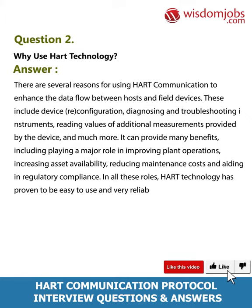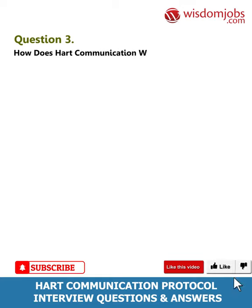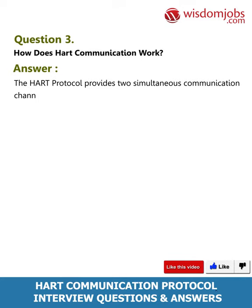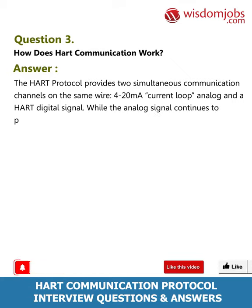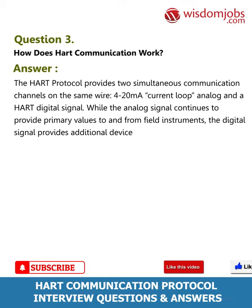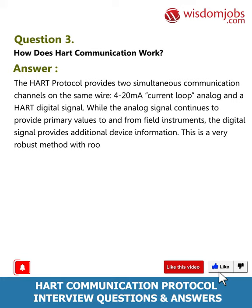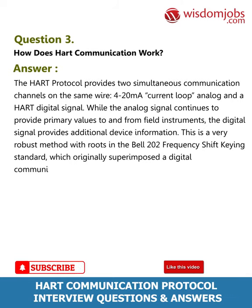In all these roles, HART technology has proven to be easy to use and very reliable. Question 3: How does HART communication work? Answer: The HART protocol provides two simultaneous communication channels on the same wire — a 4 to 20 milliampere current loop analog signal and the HART digital signal. While the analog signal continues to provide primary values to and from field instruments, the digital signal provides additional device information. This is a very robust method with roots in the Bell 202 frequency shift keying standard.